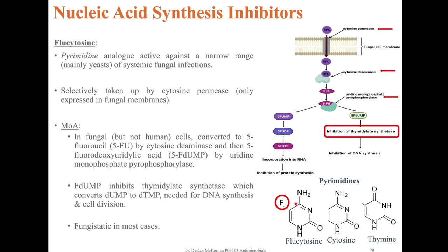Flucytosine is selectively taken up by cytosine permease, which is only found in fungal membranes and therefore not taken up by human cells. Once inside fungal cells, it is converted to 5-fluorouracil by cytosine deaminase. The 5-FU is then converted to 5-fluorodeoxyuridylic acid by uridine monophosphate pyrophosphorylase. This molecule, known as FMUMP, inhibits thymidylate synthase, which normally converts UMP to TMP (uridine monophosphate to thymidine monophosphate), a molecule needed for DNA synthesis and cell division.